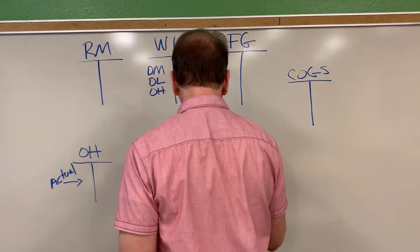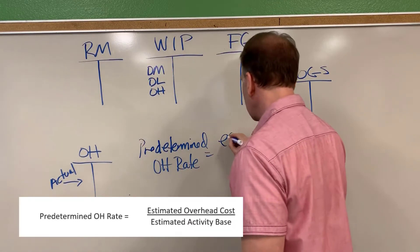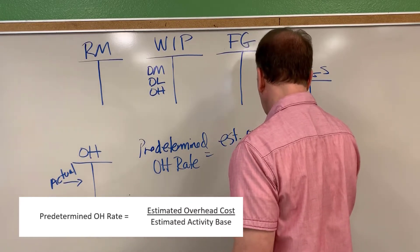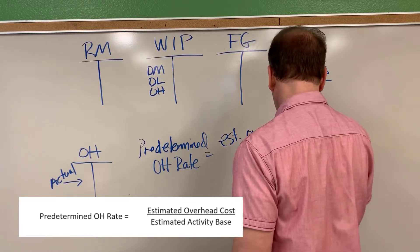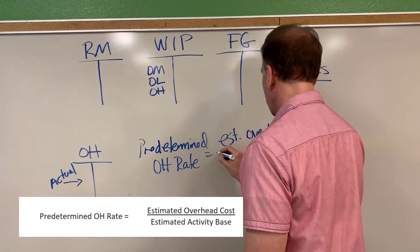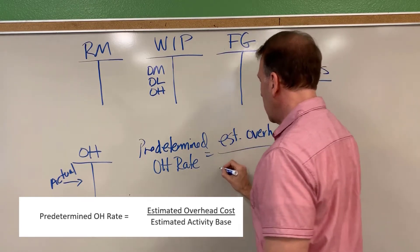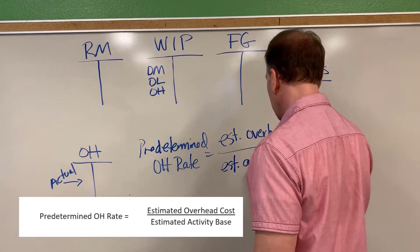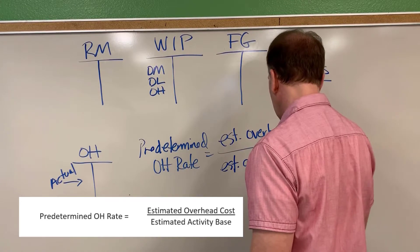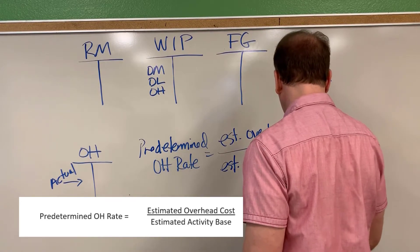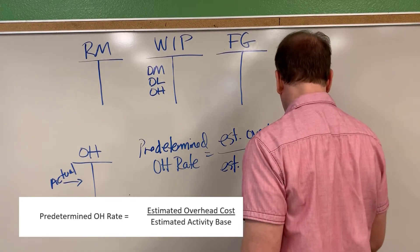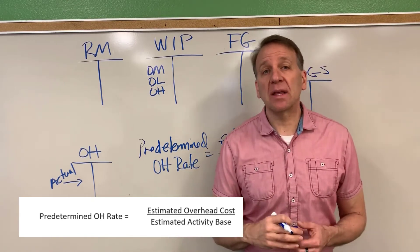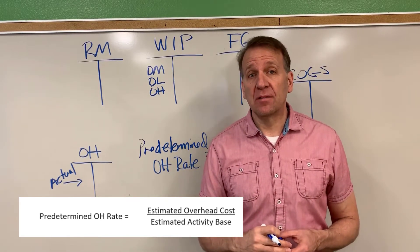The predetermined overhead rate is estimated overhead — that's a dollar amount — divided by an estimated activity base, some sort of activity that we're using in order to calculate this rate.